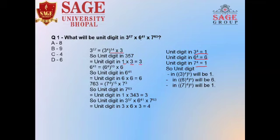Now we select the second expression, 6 to the power 41. We write 6 to the power 41. Converting 41 into the 4th-power form: dividing 41 by 4 gives 10 remainder 1, so the expression is 6 to the power 4, to the power 10, into 6. We know 6 to the power 4 is equal to 6, so 6 into 6 is 36, and the unit digit of this product is 6.